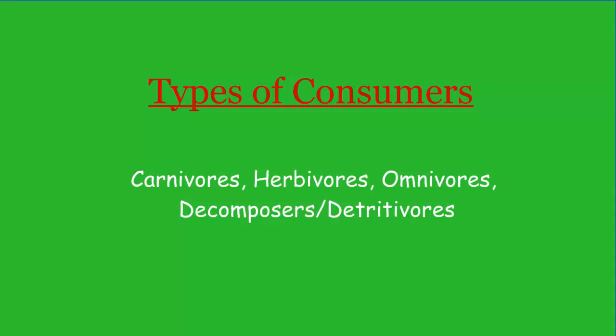There are four main types of consumers: carnivores, herbivores, omnivores, and decomposers. Sometimes we call them detritivores and there is a slight difference, but we're going to classify them together as one type of consumer. Let's take a look at the different types of consumers and see what they're all about.